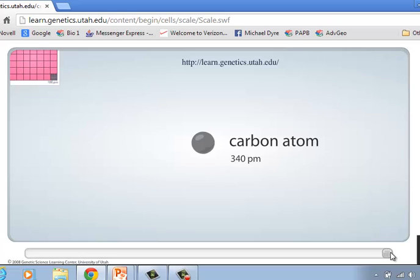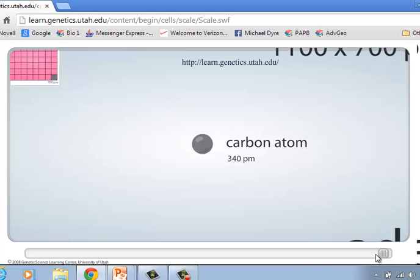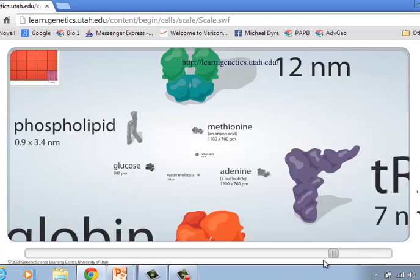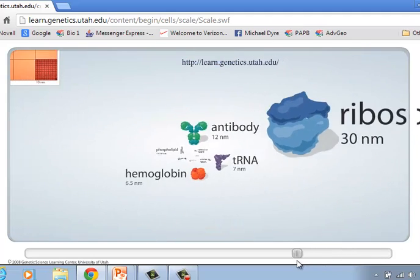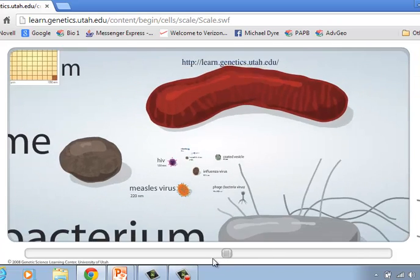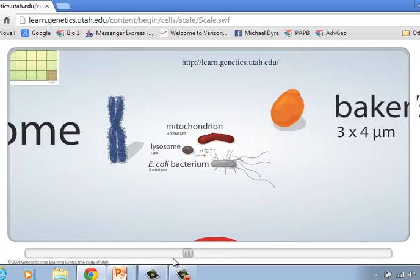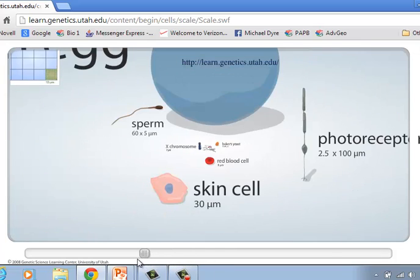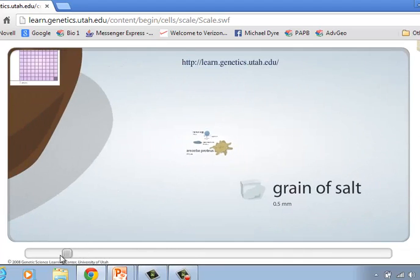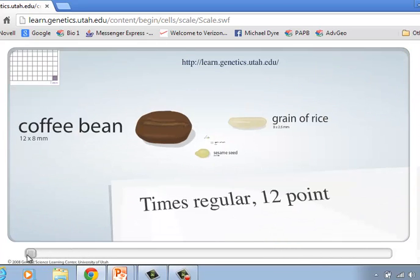So picometers, that's a billionth of a meter, 360 billionths. Now if you pay attention to this box up here as I scroll back through, you can see how many times we've magnified. You can see that box is just getting bigger and bigger as we're seeing the boxes we were in get smaller and smaller. It goes all the way down to the beginning.